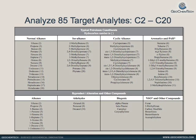In oil and gas exploration, 85 compounds are detected, including normal, iso, and cyclic alkanes and aromatics. These are direct hydrocarbons.